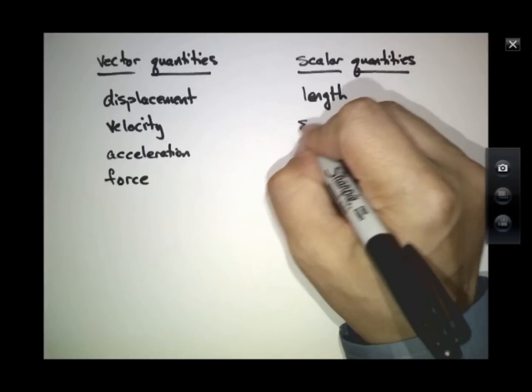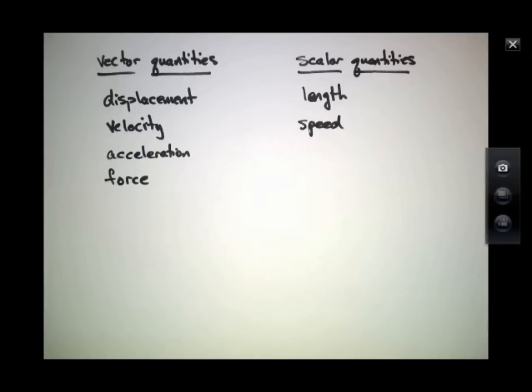Likewise, if you say the word speed, to a physicist, that's a scalar quantity. It just means how fast are you going, and it doesn't matter what direction it is. But velocity is reserved for the term where you care about both the speed and the direction of the speed.